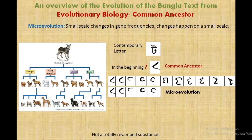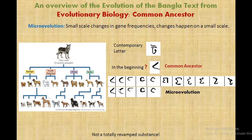Today the gray wolf is considered the common ancestor of all the pups and dogs we see around — not just Charles Darwin but many modern scientists agree on this. Many of us have learned about this in biology class and we know it as an axiom. In microevolution we don't see a totally revamped substance — we can see changes in the letter, but not on a large scale; there are still some similarities.